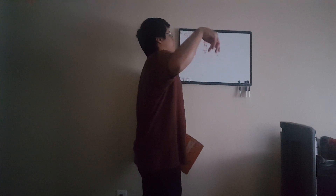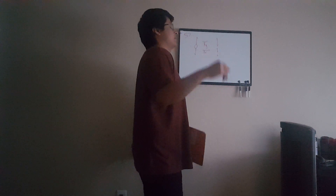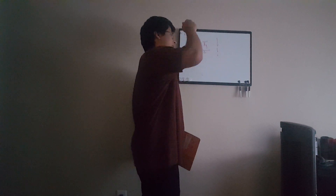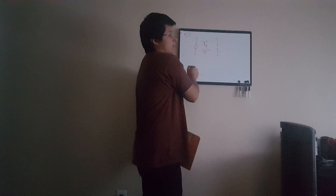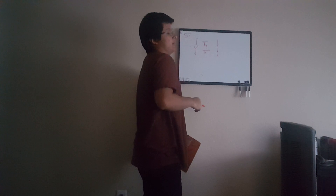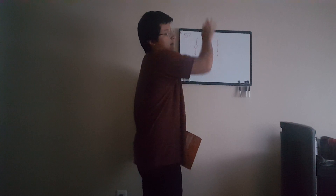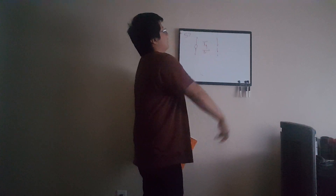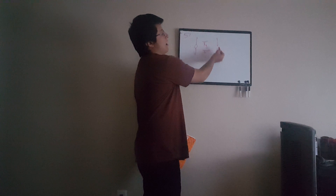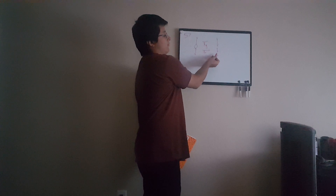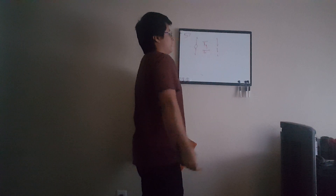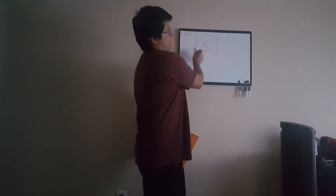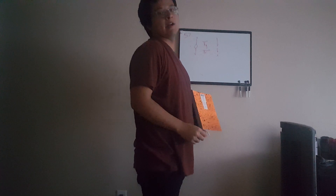Because there are only two things acting on it: gravity pointing downwards and air resistance going back up. The overall direction would be down, and this would be the free body diagram of that.